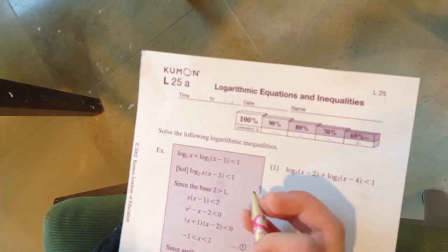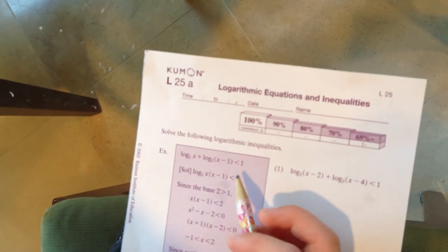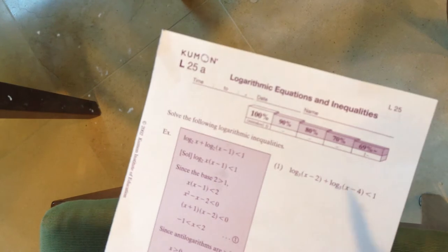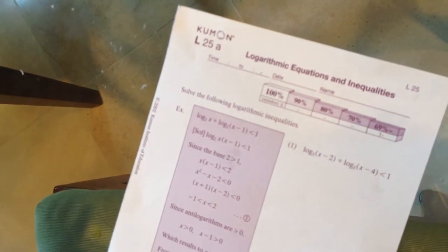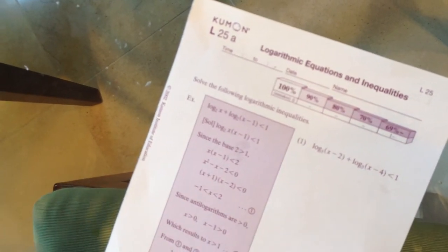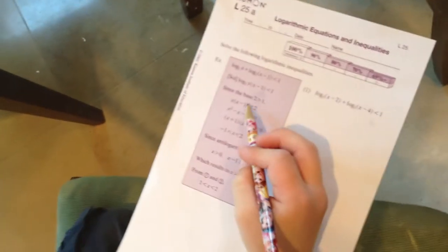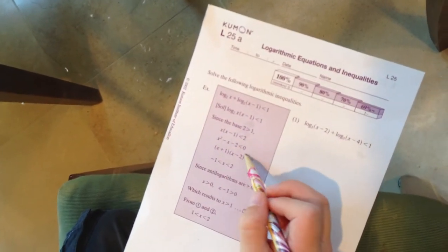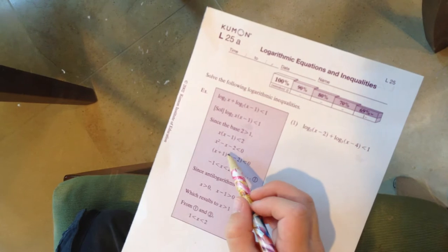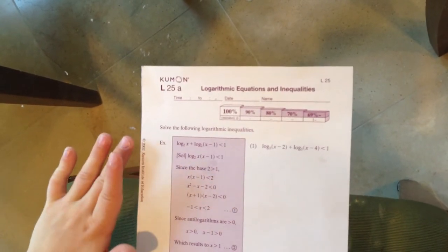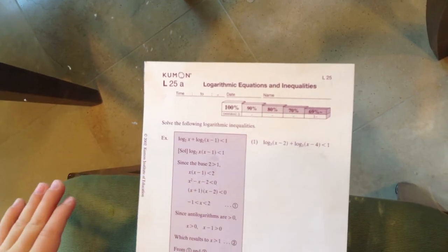You change - you don't change the sign because it's greater. So x times (x minus 1), the antilog of them, is less than 2 to the 1. And then you just simplify that, get it into polynomial form, and then factor it, and then you get x equals negative 1 comma 2. And then if you wanted to get that into a range,